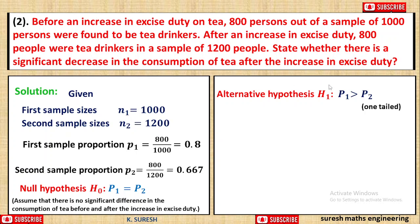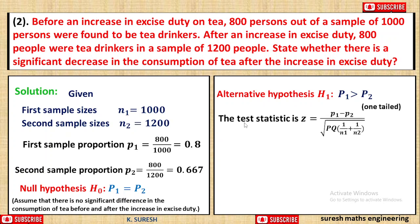In this case we consider an increase or decrease, so the alternative hypothesis is one-tailed: P1 greater than P2. The test statistic is: Z equals P1 minus P2, divided by the square root of PQ into 1 by N1 plus 1 by N2.